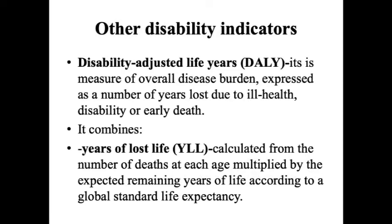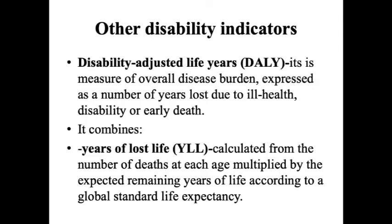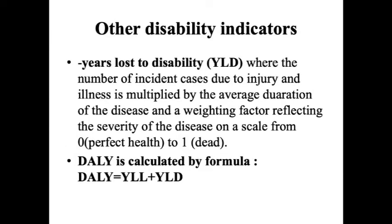Disability Adjusted Life Years (DALY) is a measure of overall disease burden expressed as the number of years lost due to ill health, disability, or early death. It combines Years of Life Lost (YLL) — calculated from the number of deaths at each age multiplied by the expected remaining years of life according to global standard life expectancy — and Years Lived with Disability (YLD), where incident cases are multiplied by average disease duration and a severity weighting factor from 0 (perfect health) to 1 (dead). DALY = YLL + YLD.